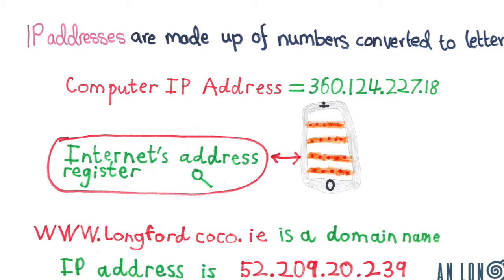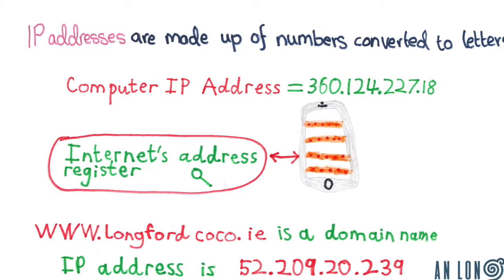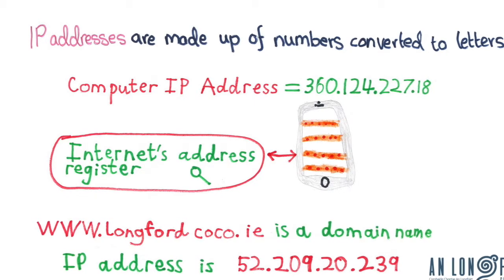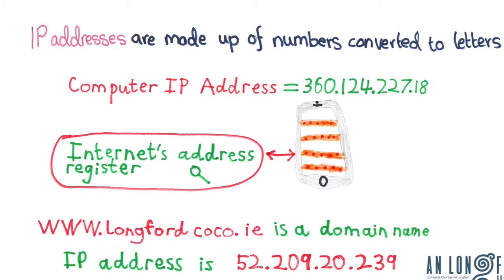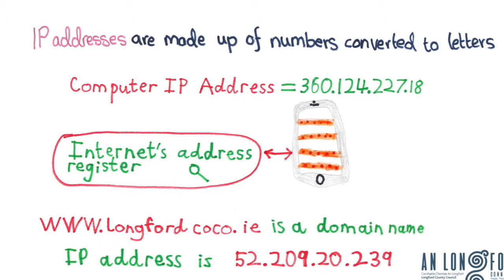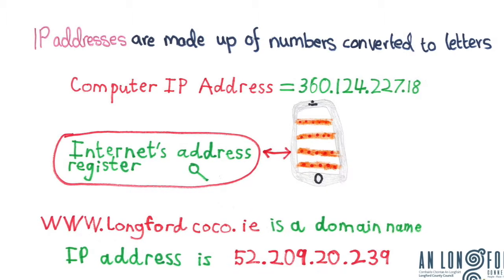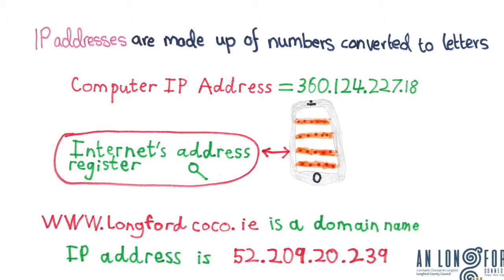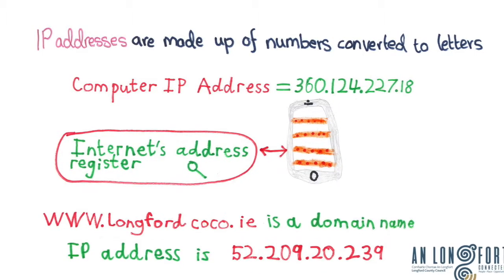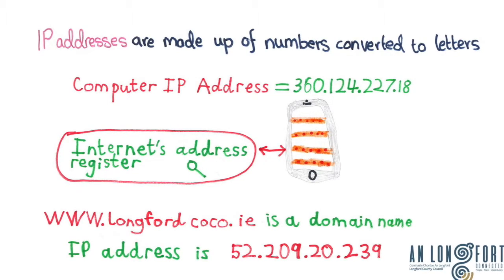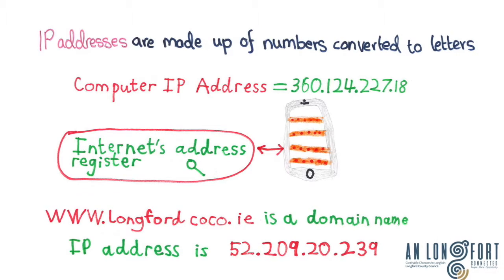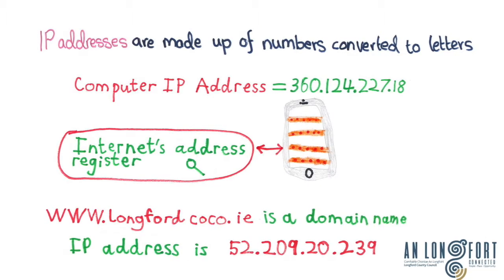Oh, I'm confused! That's why IP addresses, which are made up of numbers, are converted to letters — www.longfordco.ie is easier to understand and remember than its IP address. When you search the internet for a website, the internet connects to a server with help from the internet's address register to locate your website. The internet's address register displays the domain name and the IP address.